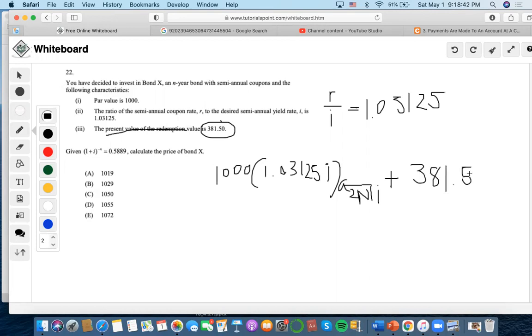Now, let's solve. So we know that we'll combine these two: 1,000 times 1.03125 to get 1031.25. So i times 1 minus v to the 2n over i. We get rid of the i's.